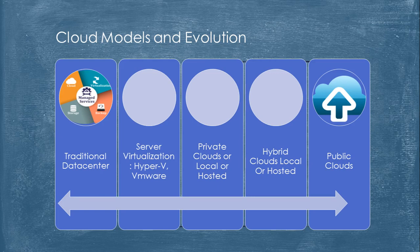Around the year 2000, the concept of virtualization came in, and we moved away from the traditional data center model where we used to procure physical boxes. In virtualization, you still procure physical boxes, but instead of using each as a single entity, you introduce another layer called a hypervisor. Hypervisors sit between virtual machines and the hardware, so on a single physical machine you can run multiple virtual machines that talk to each other and do the work.